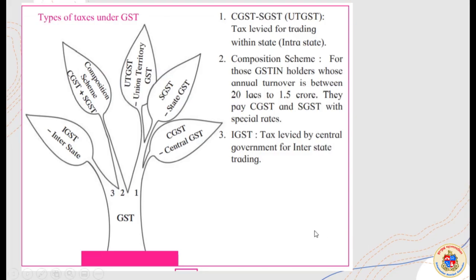Now let us look at types of taxes under GST. First is IGST — Interstate GST. This applies when a transaction crosses state borders. For example, if a cycle is manufactured in Gujarat but sold in Maharashtra, two states are involved. Tax is levied by those states depending on where buying and selling takes place.